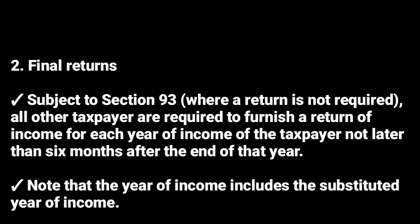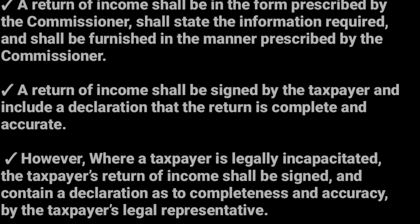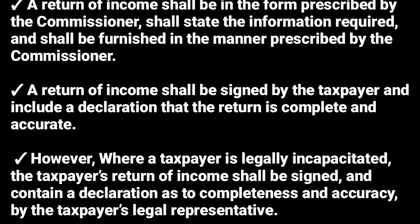The final return of income includes rental income. A return of income shall be in the form prescribed by the commissioner, shall state the required information, and shall be furnished in the manner prescribed by the commissioner. You will file it according to the way the commissioner wants you to file it and include what the commissioner wants you to include.